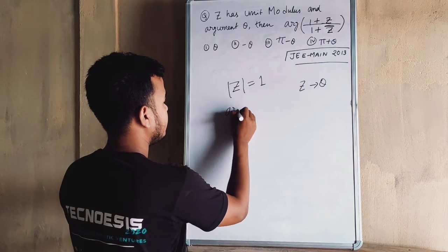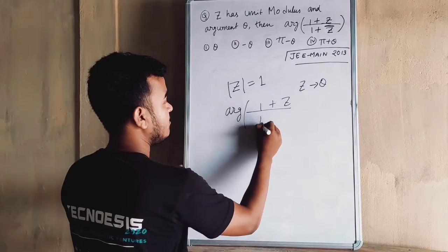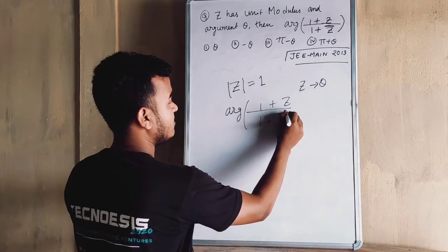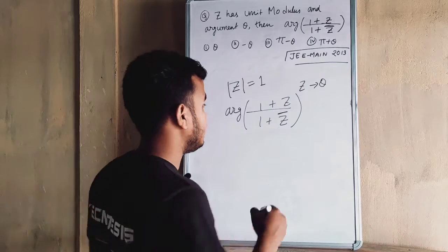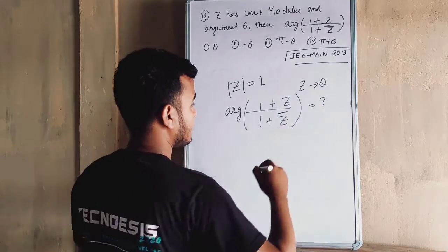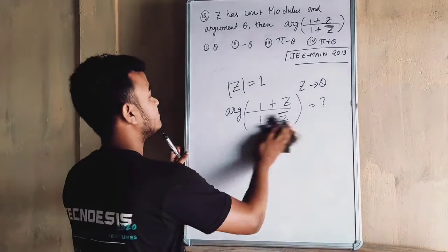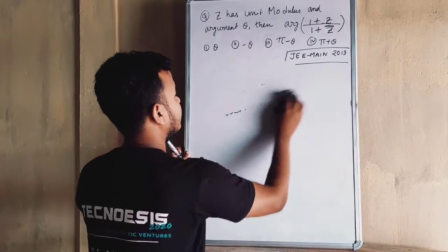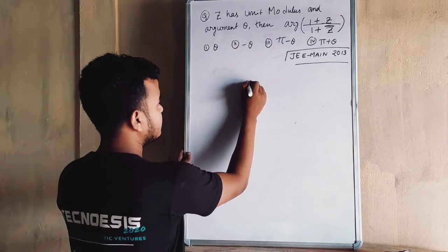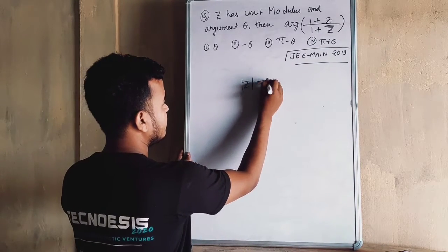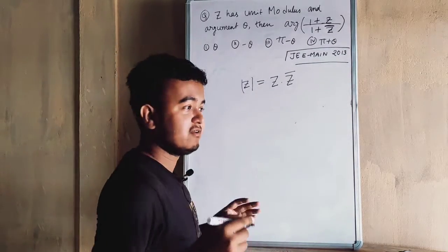To solve this, there is a formula we need. The argument of (1 + Z) / (1 + Z-bar) — Z-bar is the conjugate. The important formula here is: the modulus of Z squared equals Z into Z-bar.